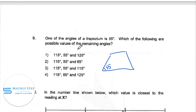Which of the following are possible values of remaining angles? So for trapezium, we need to know that this line and this line, they are parallel with each other. And this angle plus this 55 is supposed to be 180. So we can find out the answer for this angle. It's 180 minus 55, which is 125.